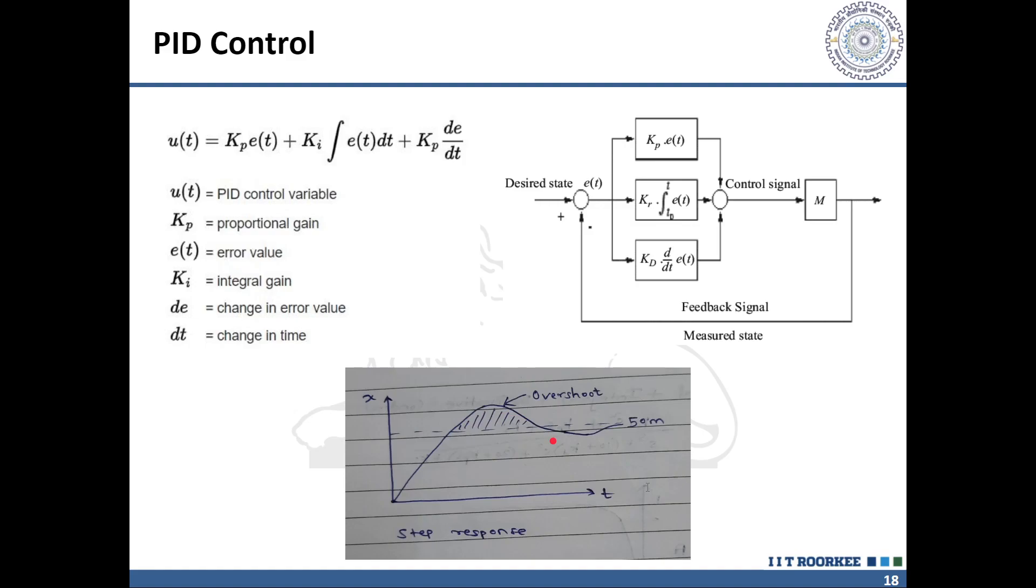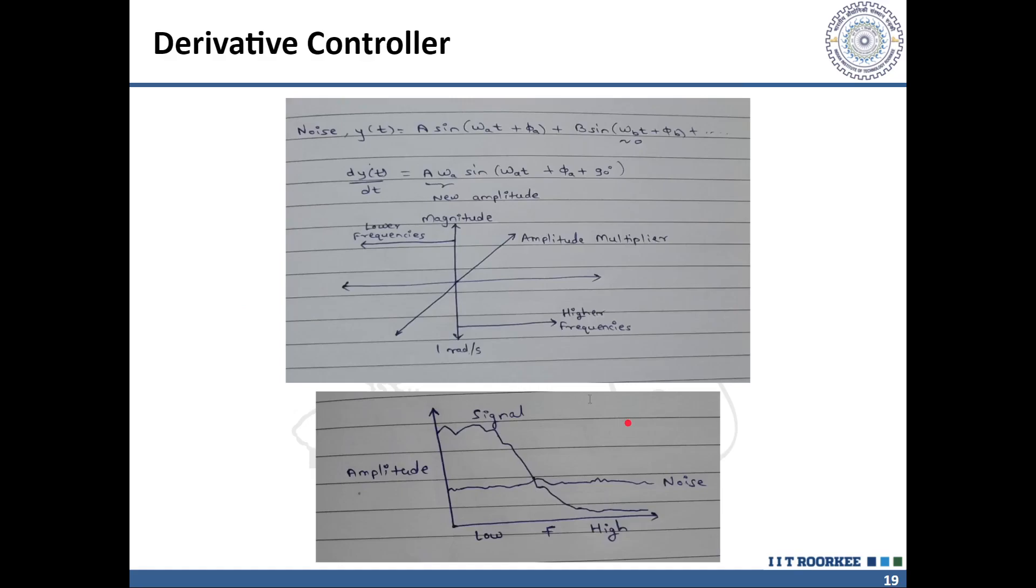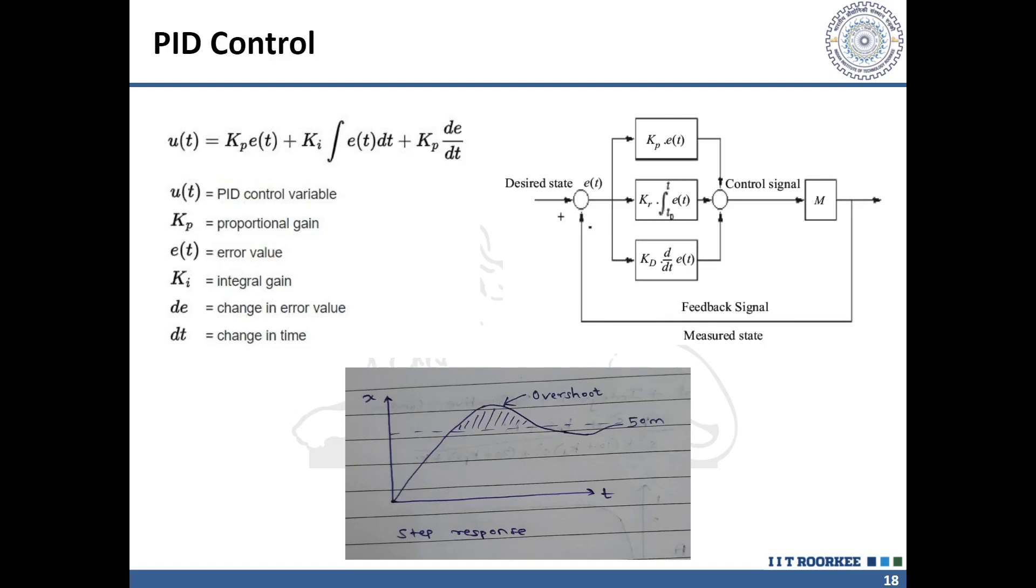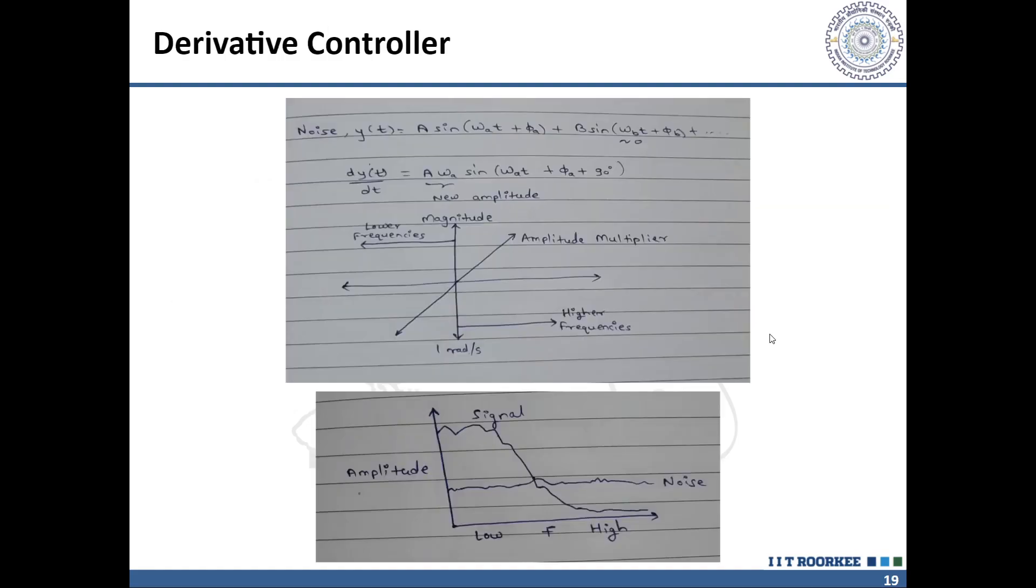To tackle overshooting, we can add a component which can predict the future and respond to how fast we're closing in on our goal - we do that with a derivative. A derivative produces a measure of the rate of change of error, that is how fast the error is growing or shrinking. For example, if the drone is rising quickly and fast approaching the goal, that means error is quickly decreasing and this component will have a negative value which when added to our controller will try to lower the propeller speed. The performance of this PID control can be further improved by making modifications in the integrator and derivative.